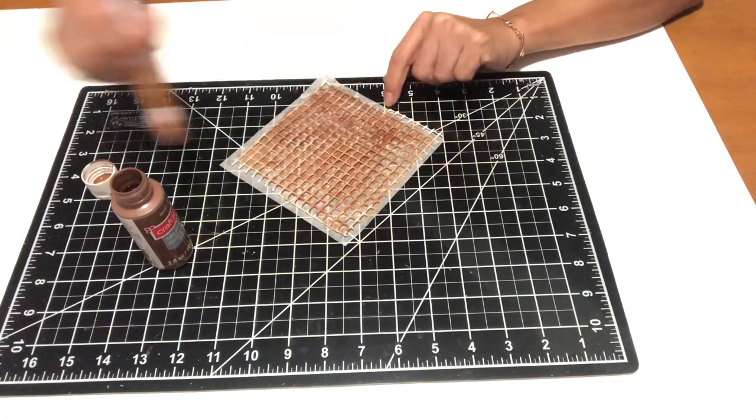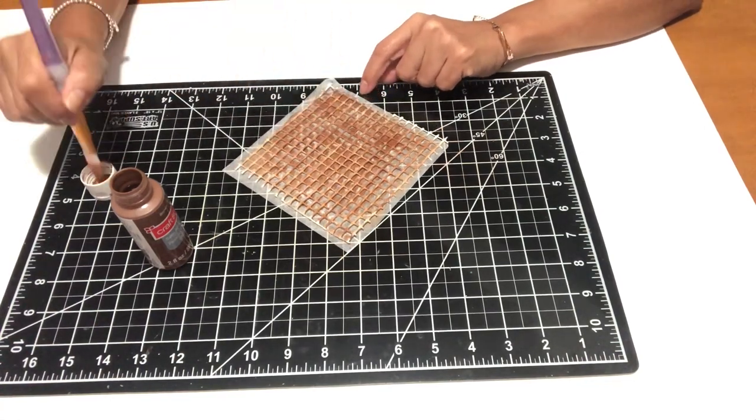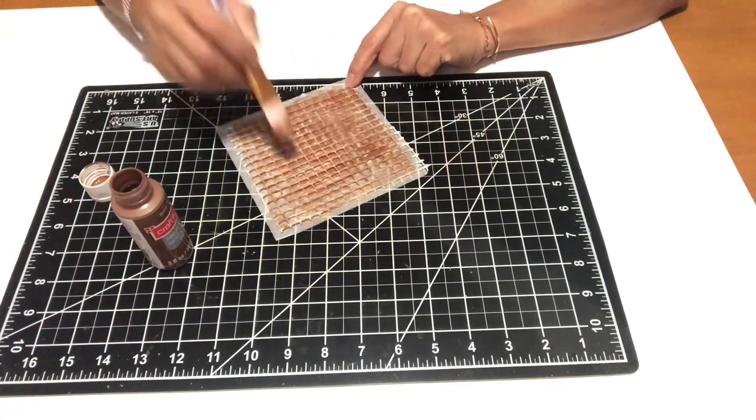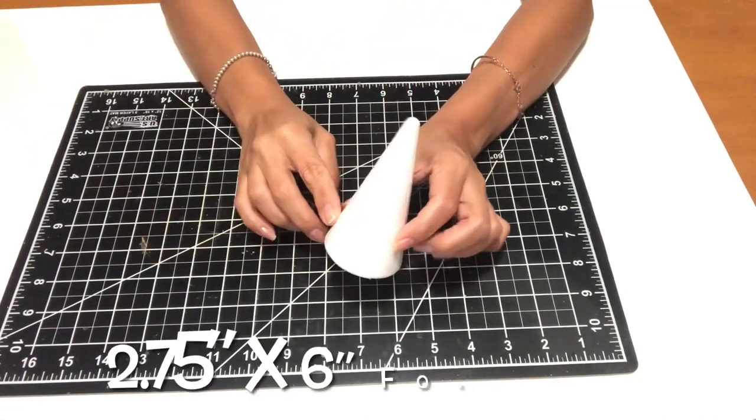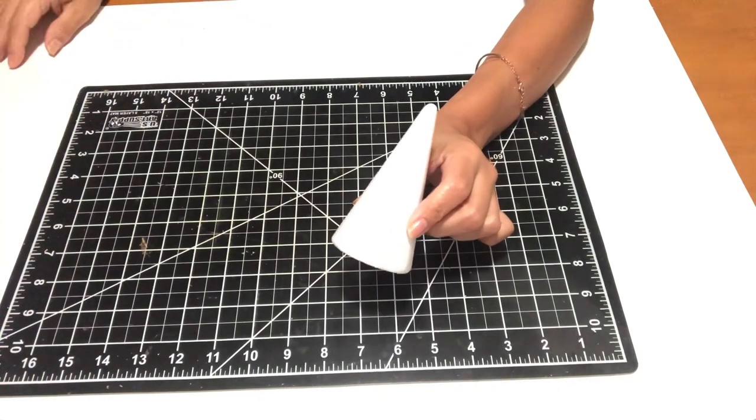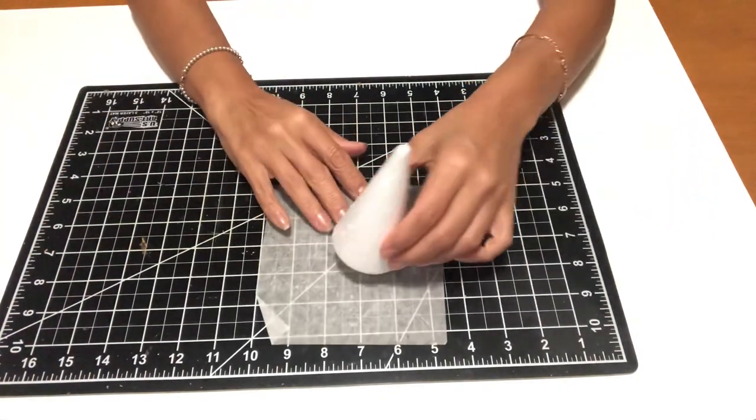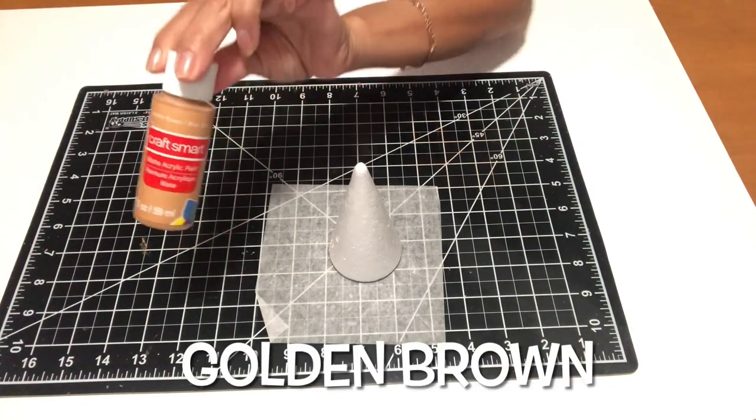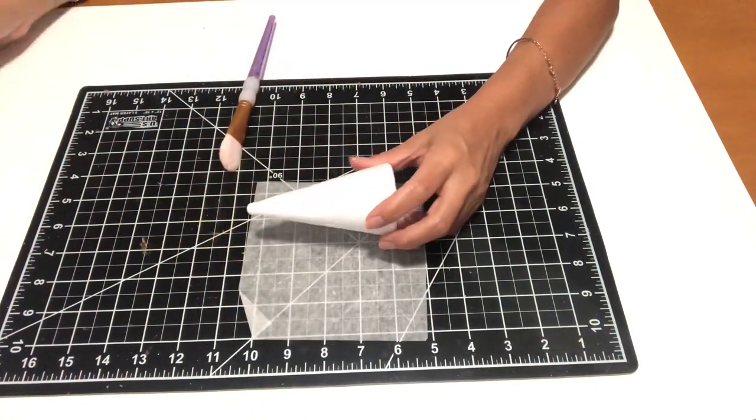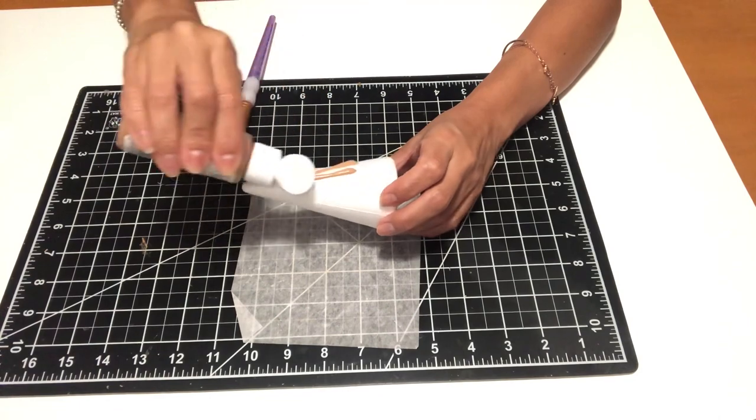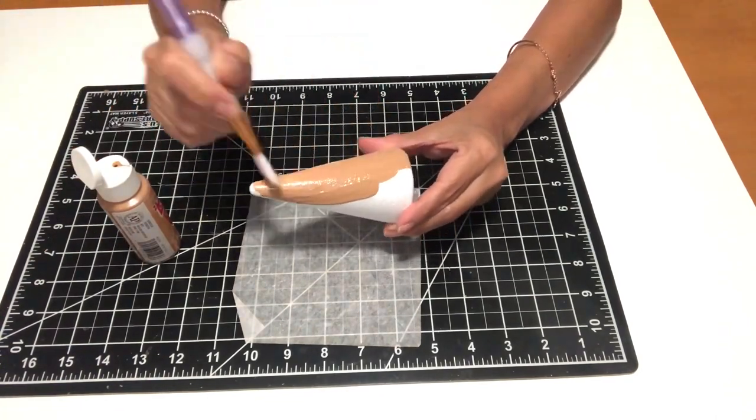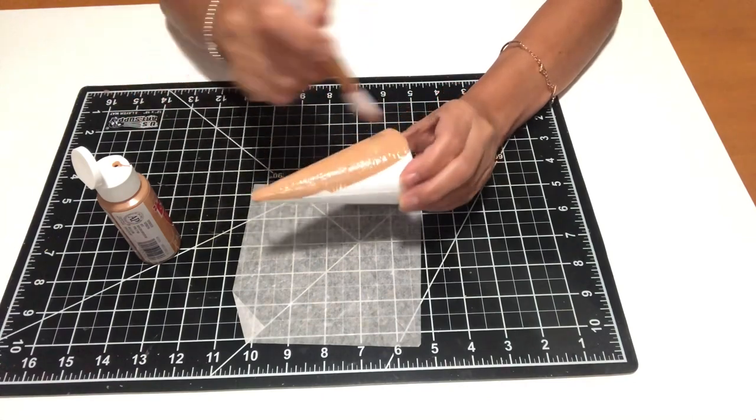After I let it sit and dry, I went in again with touch-ups with the paint and just painted over wherever the pink came off. Once all of that was set and dry, I went in with my light spackle which was going to be mimicking the garland, and I just went in all the way around.